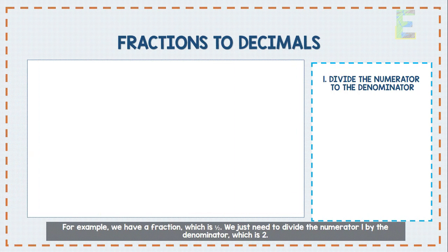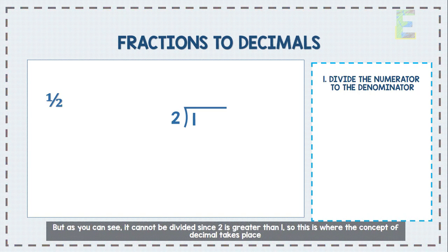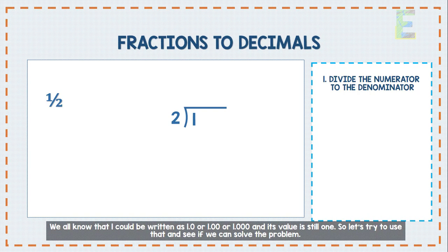we have a fraction which is 1 over 2 or one-half. We just need to divide the numerator 1 by the denominator which is 2. But as you can see, it cannot be divided since 2 is greater than 1. So, this is where the concept of decimal takes place. We all know that 1 could be written as 1.0 or 1.00 or 1.000 and its value is still 1.